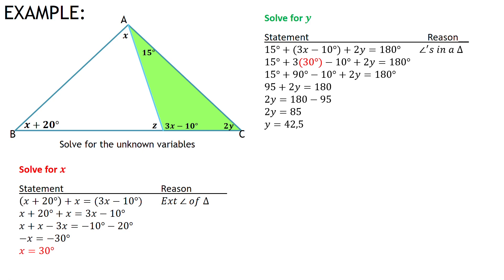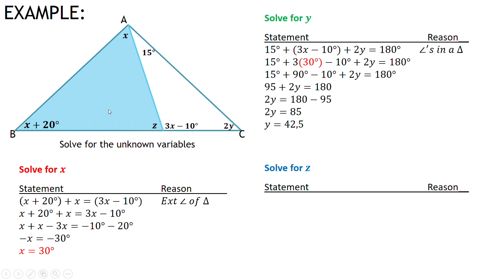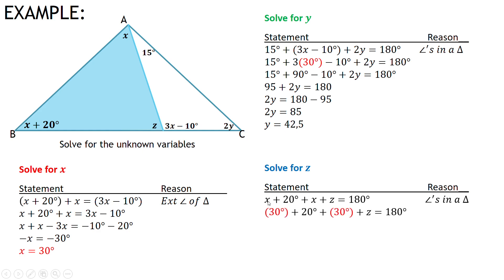The last one is to solve for z. Z is in this triangle, and I can use angles in a triangle again — they add up to 180 degrees. I substitute x as 30 degrees. So 30 plus 20 plus 30 plus z equals 180 degrees. 30 plus 20 plus 30 gives me 80. Subtract 80 to get z alone, and z equals 100 degrees.